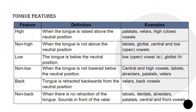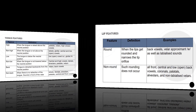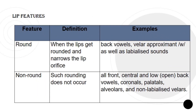Back: tongue is retracted backwards from the neutral position, and we have velars and back vowels as examples. Non-back: when there is no retraction of the tongue, referring to sounds in front of the velar — so we have labials, dentals, alveolars, palatals, central, and front vowels as examples.